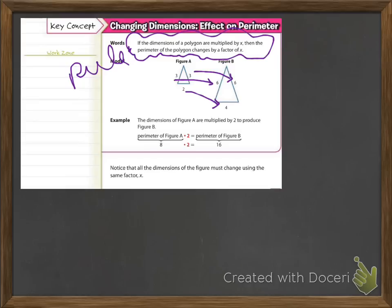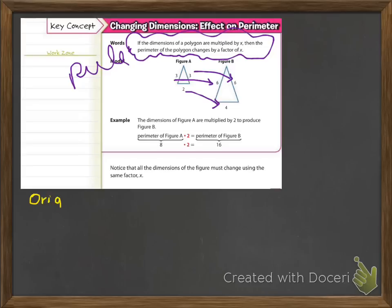I've drawn arrows from the 3 to the 6, from the other 3 to the 6, and from the 2 to the 4 — those are the corresponding sides. Each side length has been multiplied by 2. So using the rule, if all side lengths are multiplied by 2, the final perimeter is also multiplied by 2. The perimeter of the first triangle is 3 plus 3 plus 2 equals 8. The perimeter of the second triangle is 6 plus 6 plus 4 equals 16. Write 'original' and 'new' to compare and justify.